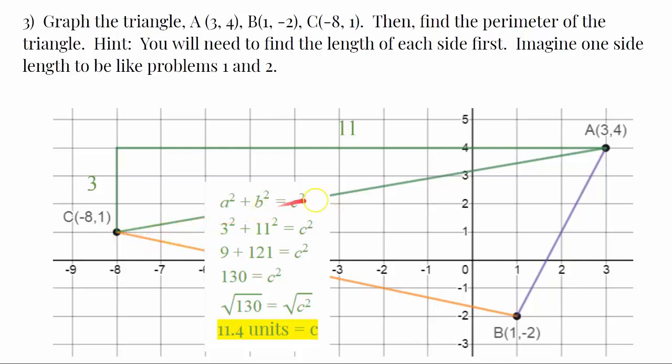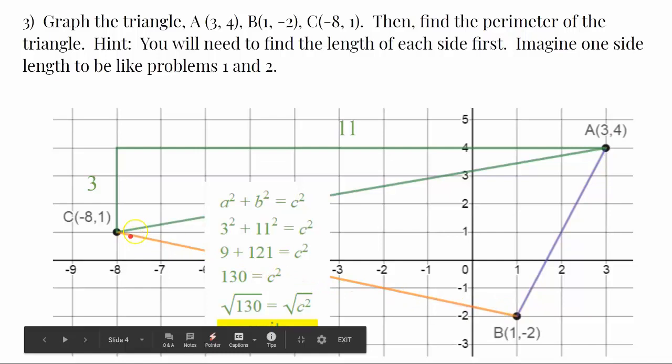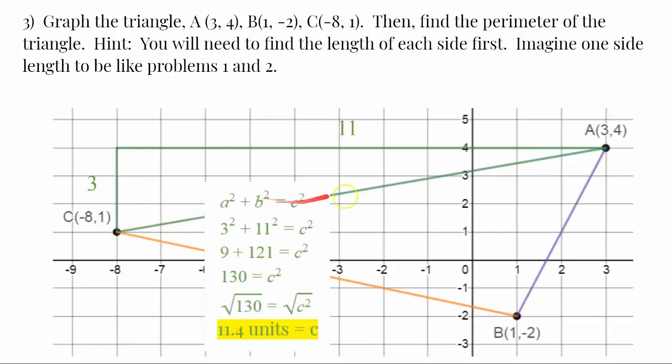So, again, that is this first side, this green side of the triangle, because we're trying to find the perimeter, which is the distance around, the sum of all three sides. So, I use the Pythagorean theorem to find the hypotenuse of this green triangle that I formed.